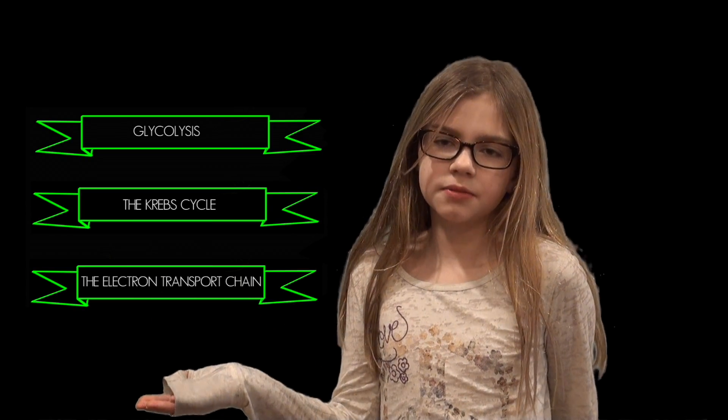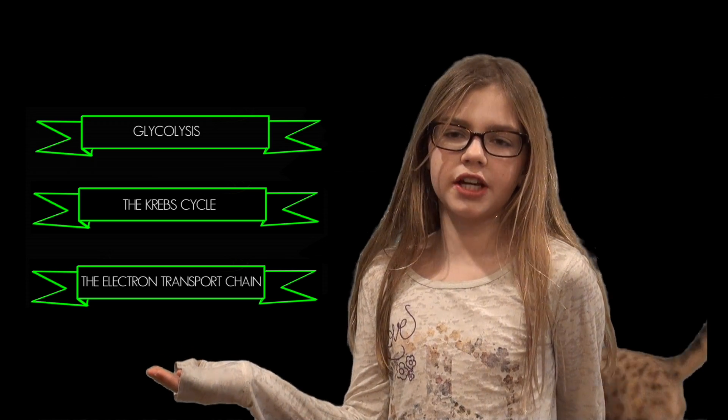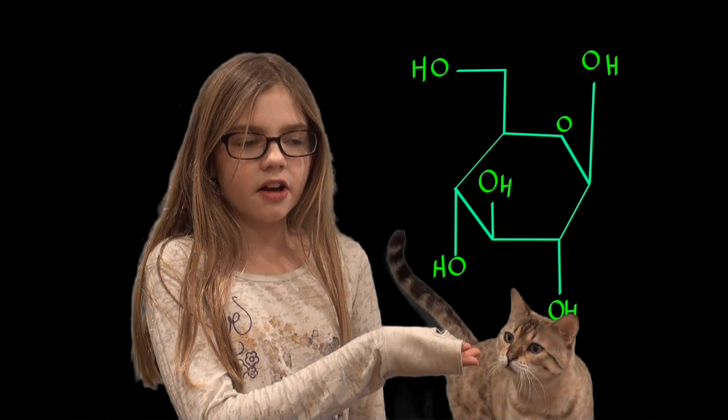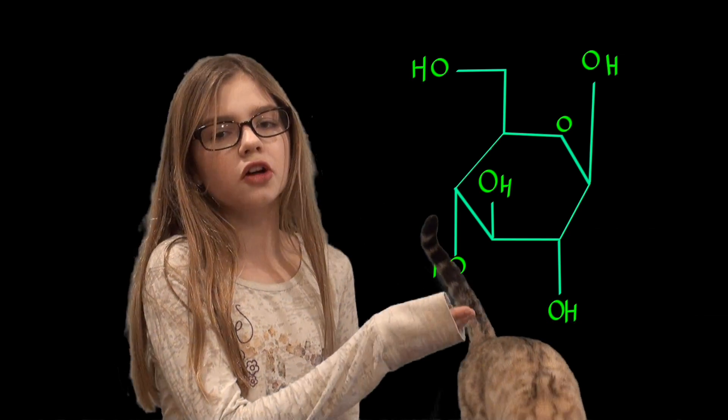Cellular respiration is composed of three major stages: glycolysis, the Krebs cycle, and the electron transport chain. Let's start with glycolysis. In glycolysis, being the first step of cellular respiration, you start with a single molecule of glucose.